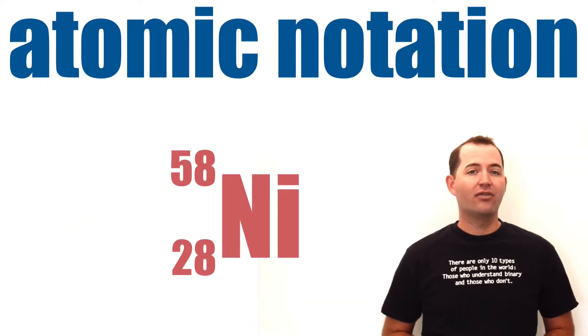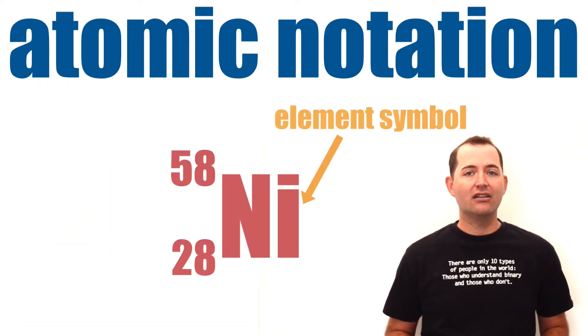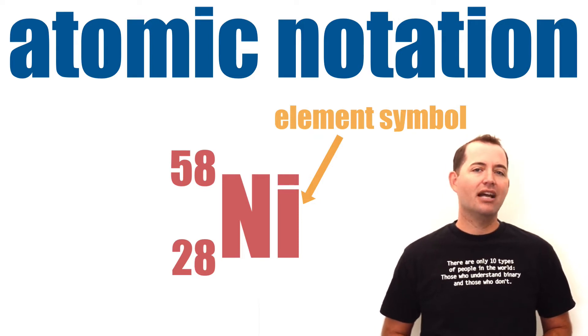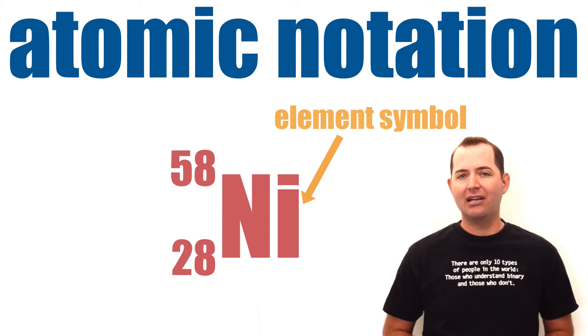A common notation for an atom is a large letter or letters that identify the element type. This is the same symbol as we find for the elements on the periodic table.